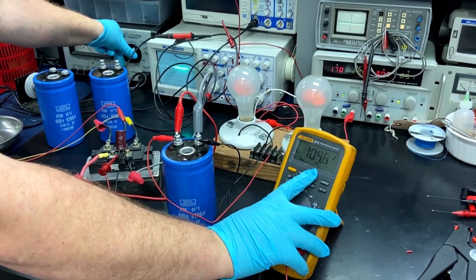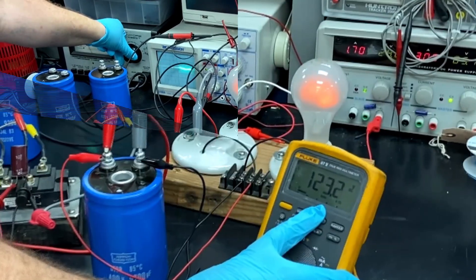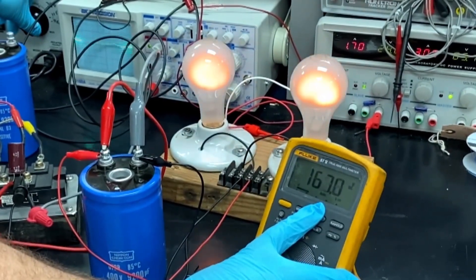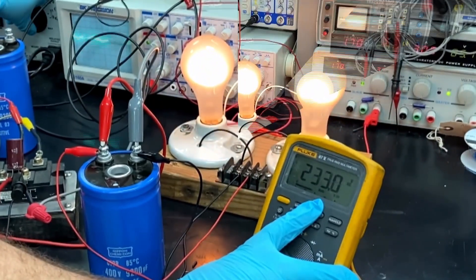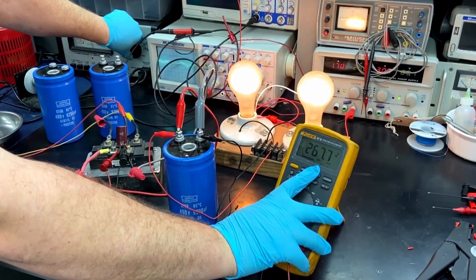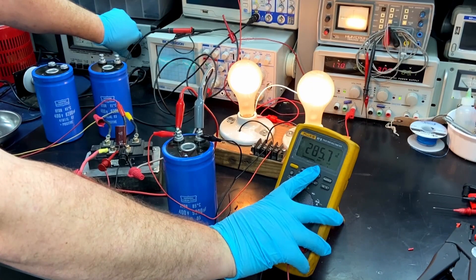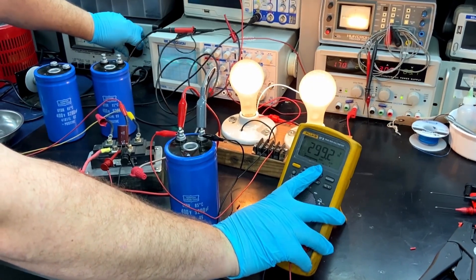As you can see, the bulbs are starting to illuminate. Now we are at around 275 volts. We will continue to increase the power.